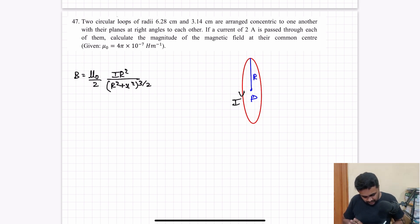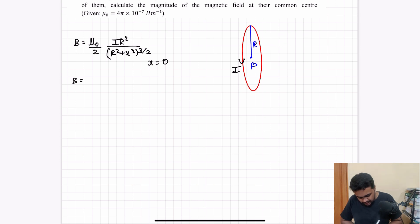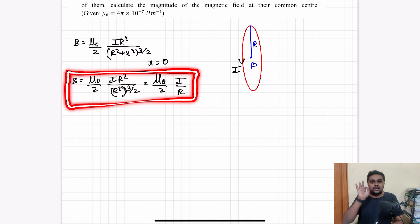The magnetic field at point P is given by the equation B equals mu naught by 2 times I R squared by (R squared plus x squared) to the power 3 by 2. I have to move point P to the center, so x becomes equal to 0. What will be the value of B? That will be mu naught by 2 times I by R.